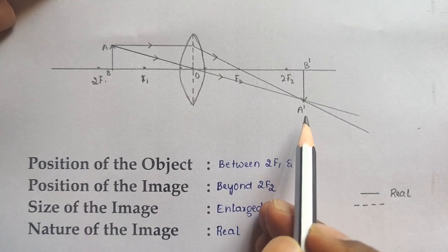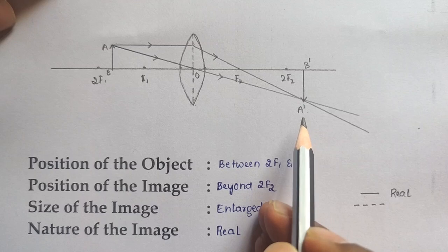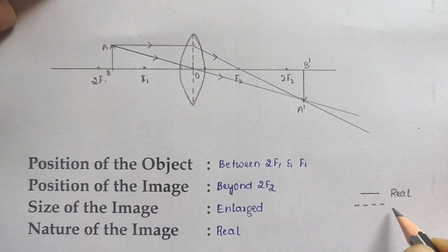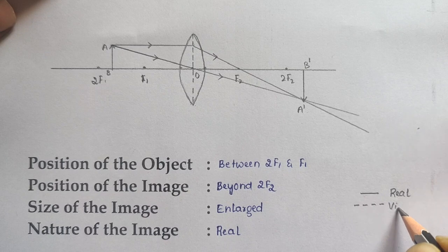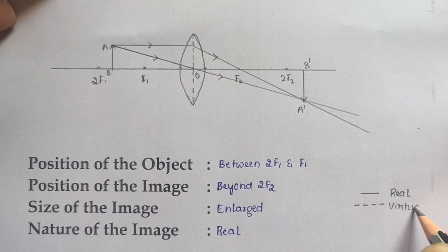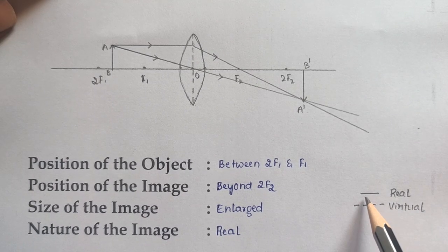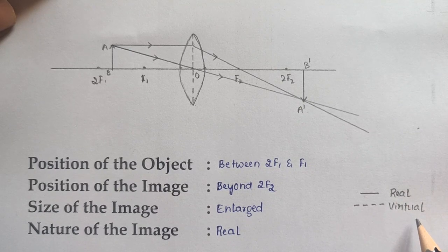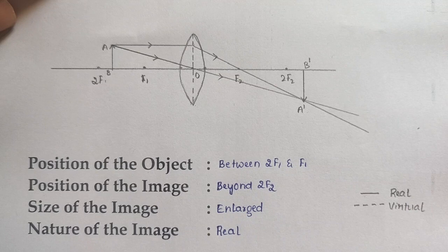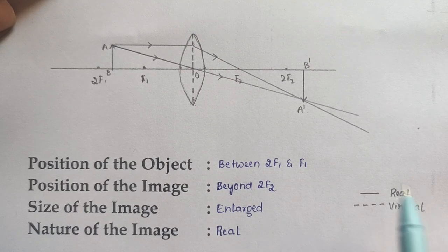Here is a simple trick: when real rays meet again at a point, that is a real image. When rays only appear to meet — with a dotted line intersection — that is a virtual image. A solid line intersection means real image; a dotted line intersection means virtual image. In this case the image is on the opposite side of the object, and the actual rays intersect, so it is a real image.